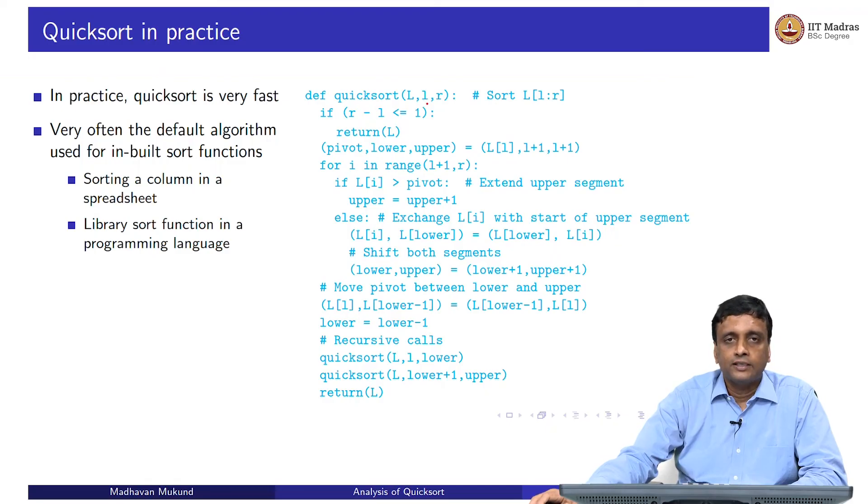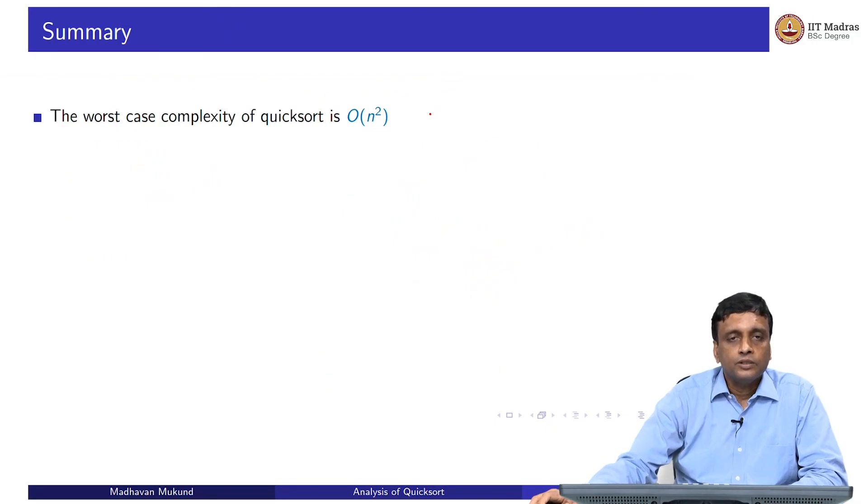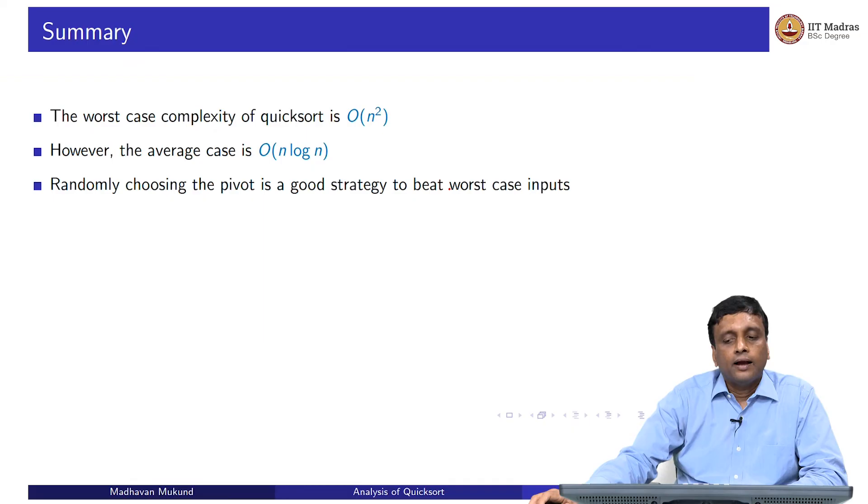Despite the worst case, this implementation without the overhead of merge sort actually makes it competitive and very efficient in practice. To summarize, the worst case complexity is n squared, but the average is n log n. One way to achieve this average is to have a randomized strategy to choose the pivot.